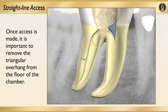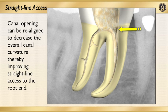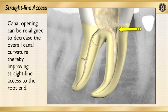The second thing you need to do is gain straight line access. Once the access is made, there's a little triangle where the access chamber meets the canal orifice. You want to remove this triangle. Once you remove this triangle, you can have more of a straight line access to the apex. You don't want canals to curve many times, and if you can remove that triangle, you're going to have more of a straight line view down to that apex.